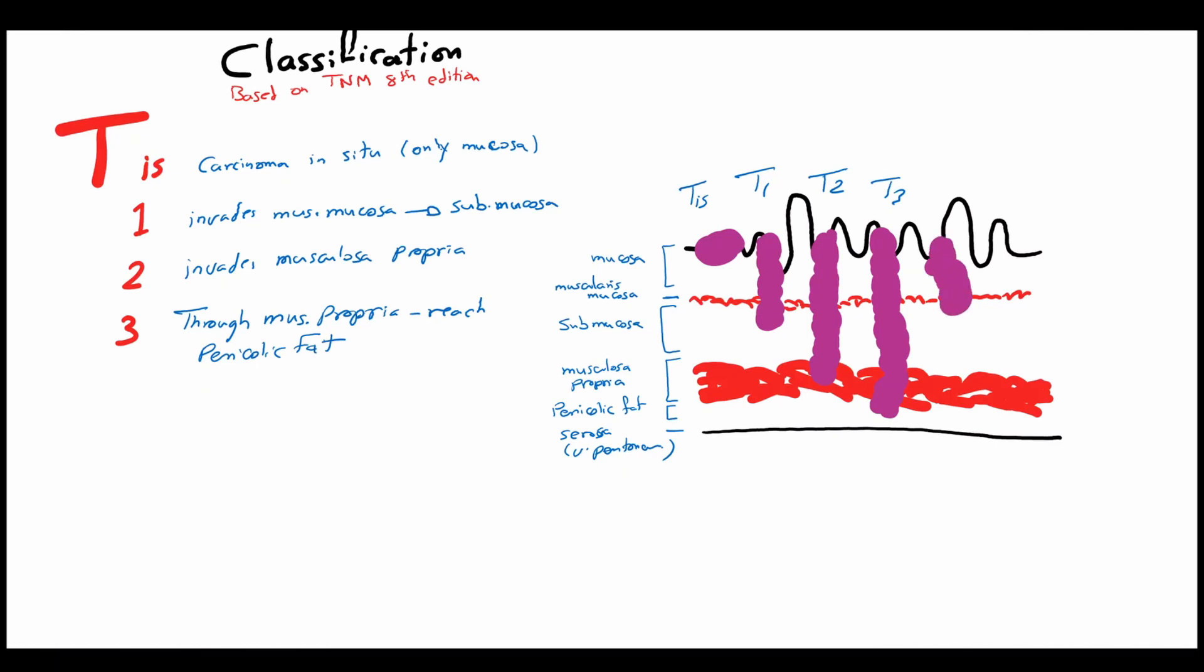A T4 tumor perforates the serosa. T4a includes the perforated tumor without invasion of adjacent organs. T4b tumor invades adjacent organs like spleen or kidneys.